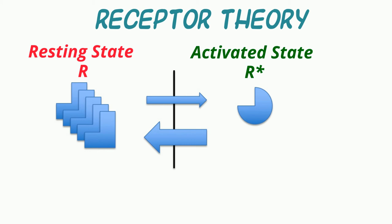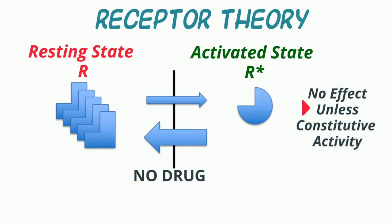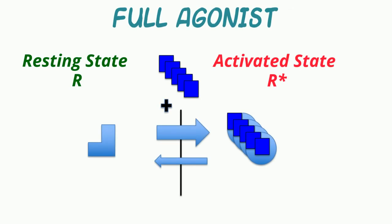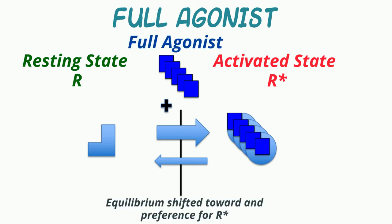Let's first look at the situation where there's no drug ligand. In this scenario, there's no effect unless the non-bound receptor is associated with a basal or constitutive activity — the situation we'll discuss later when we talk about inverse agonists. When a full agonist interacts with a receptor, it shifts the equilibrium toward the activated receptor form, and it has a preferential affinity for the activated form relative to the resting form. The greater the conformational selectivity for R star, the greater the efficacy.